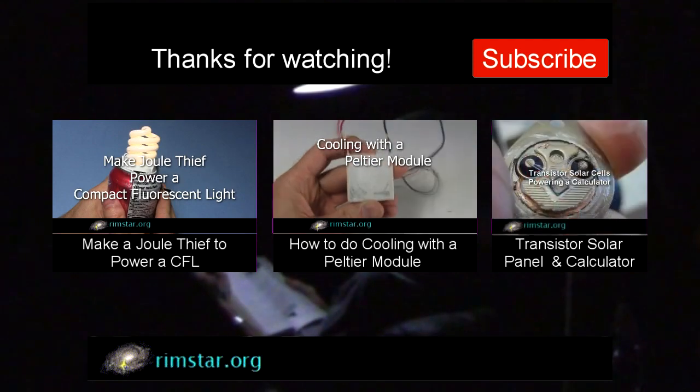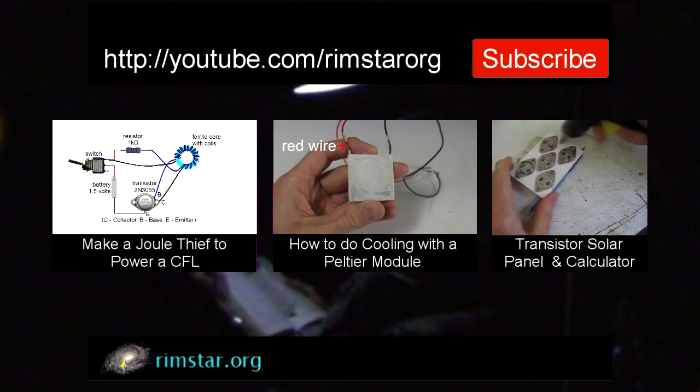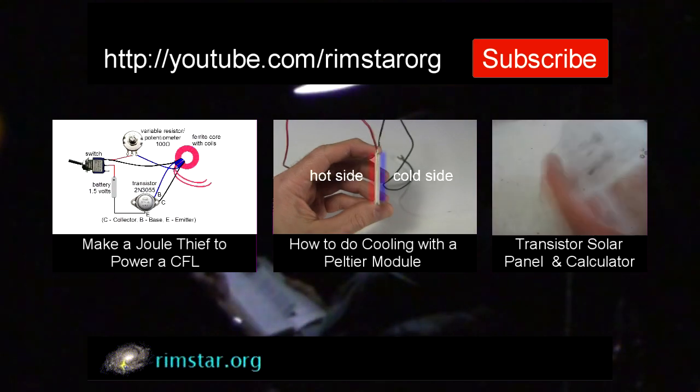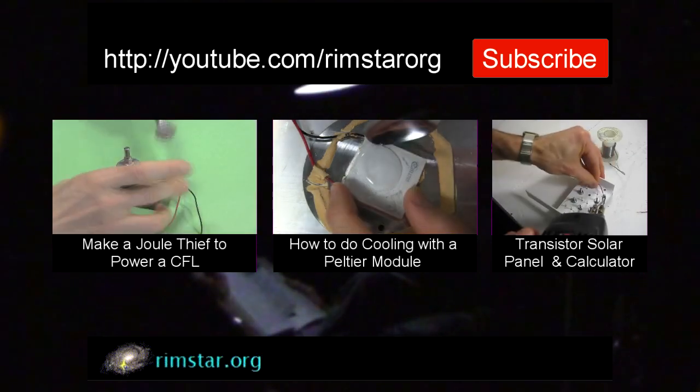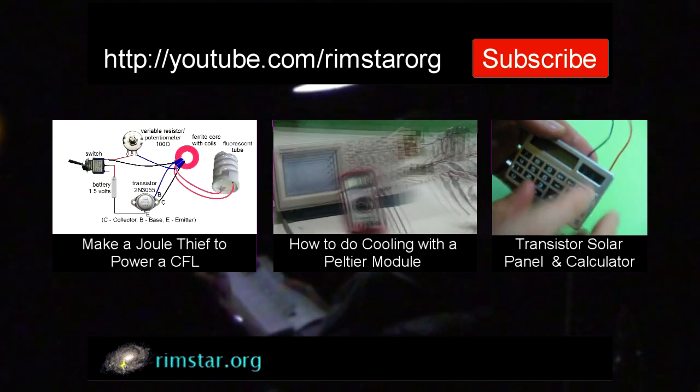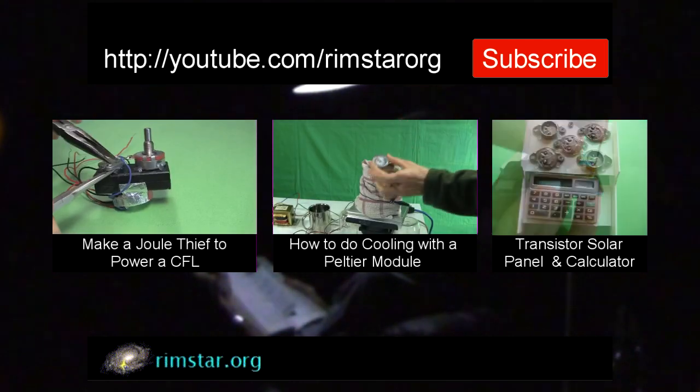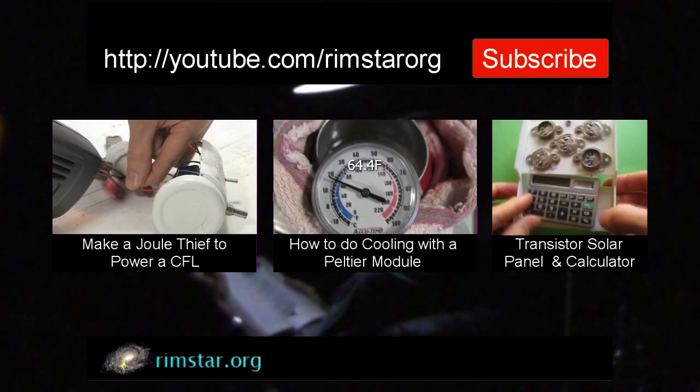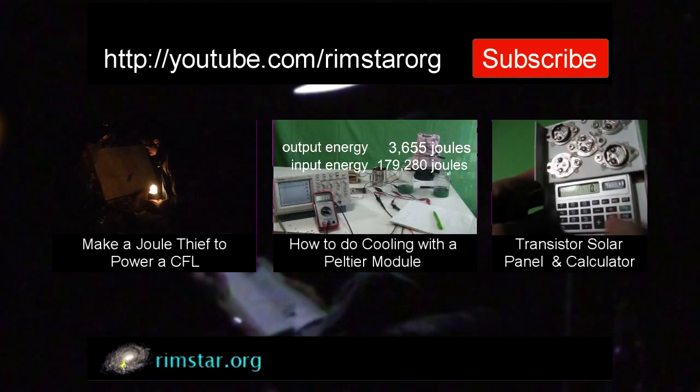Well, thanks for watching. See my YouTube channel, Rimstar Org, for more interesting videos like this. That includes the one about using a Joule Thief to power a compact fluorescent light bulb, another on how to do cooling using a Peltier module, and one on making a solar panel out of transistors that powers a calculator. And don't forget to subscribe if you like these videos, or give a thumbs up and leave a question or comment below. See you soon.